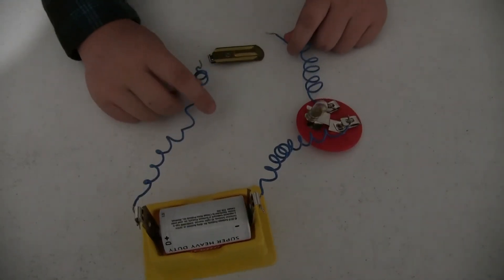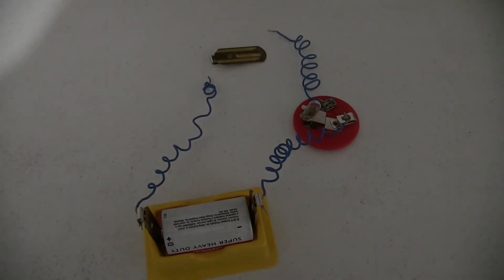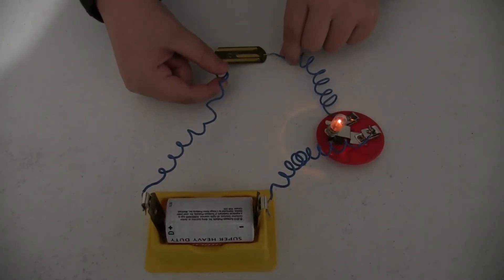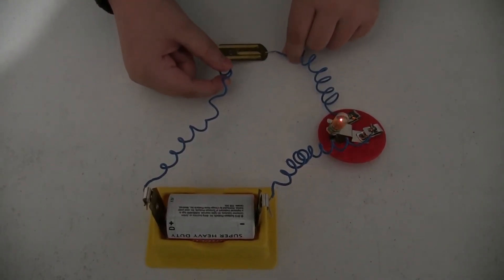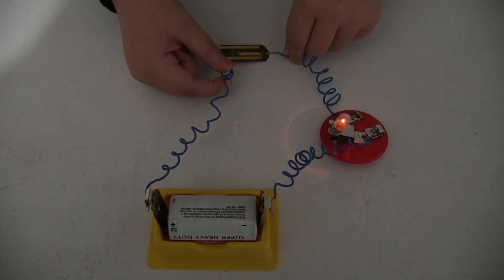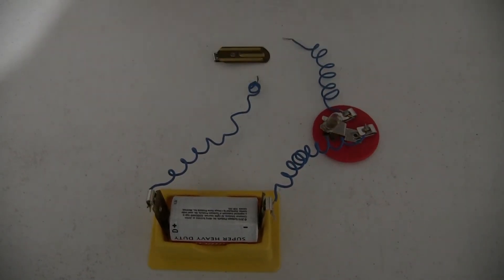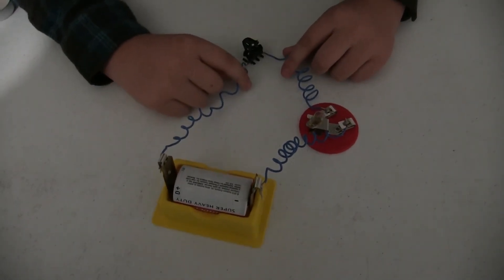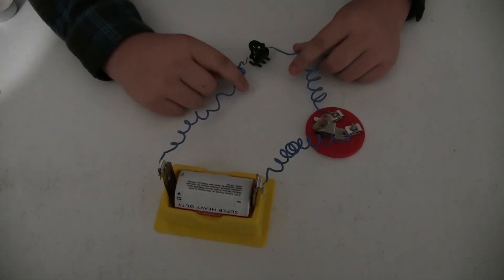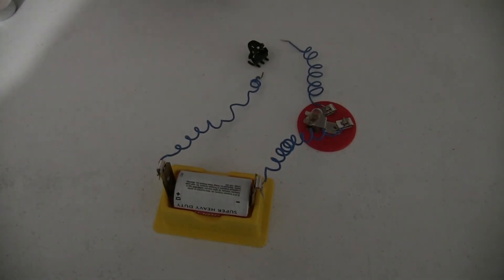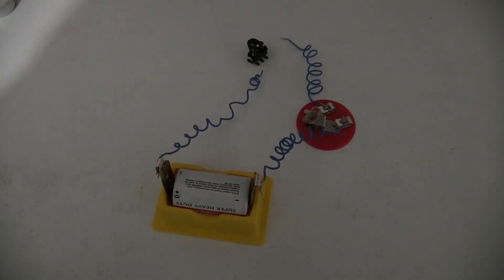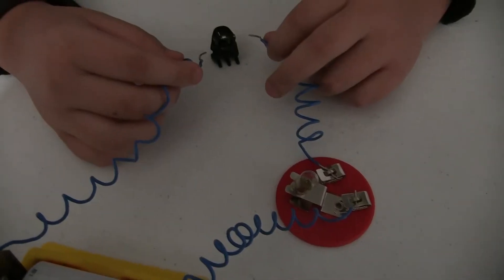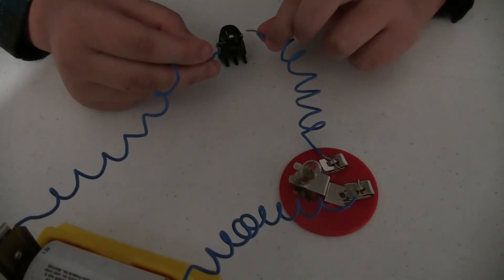You could build yourself a conductivity tester with a simple circuit like this. And as you can tell, it goes through the metal and lights up the light bulb. Now we're going to try a clip. And as you can tell, I'm touching the plastic and it's not working because the plastic is not conductive.